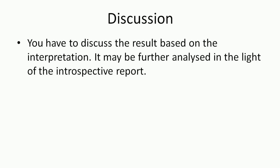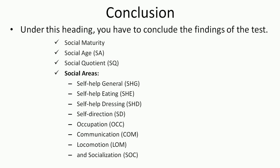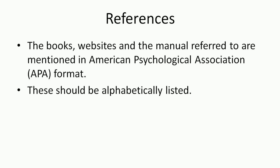After scoring, the next part is discussion. In the discussion section, you discuss the results based on the interpretation, which may be further analyzed in the light of the introspective report. Under conclusion, you conclude the findings of the test — social maturity, social age, social quotient, and the eight sub-areas: self-help general, self-help eating, self-help dressing, self-direction, occupation, communication, locomotion, and socialization. Clearly state the scores for these areas and write the result under the conclusion heading. You may also give any suggestions under this heading.